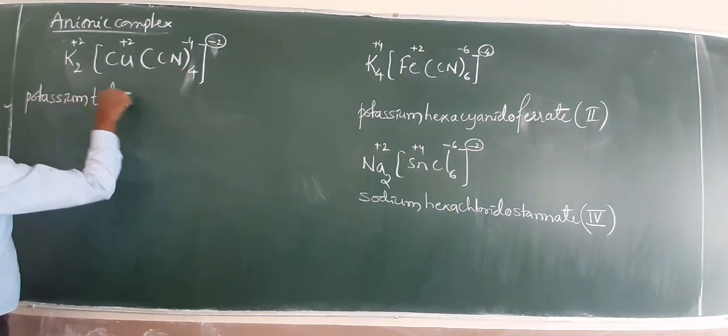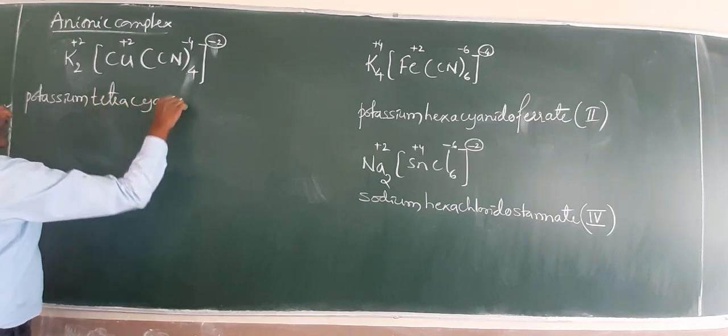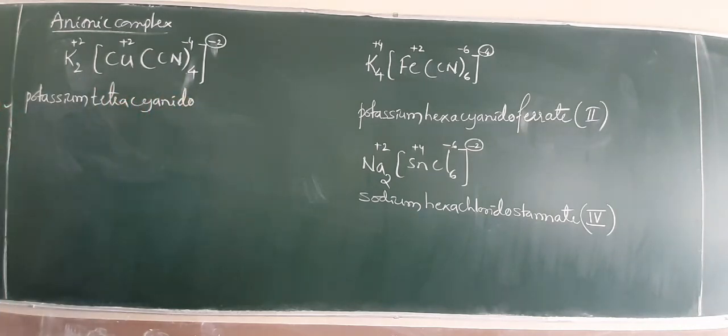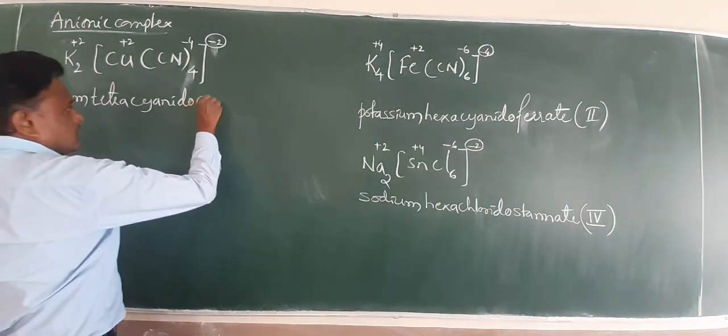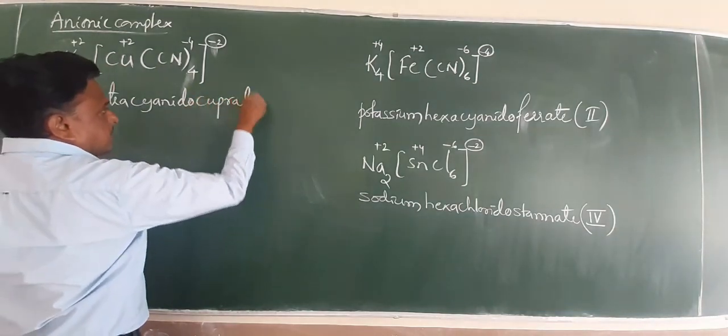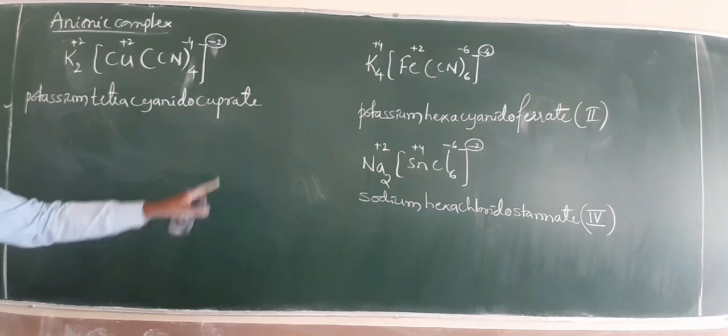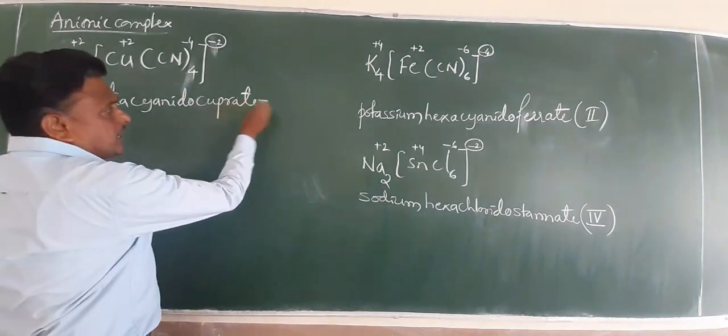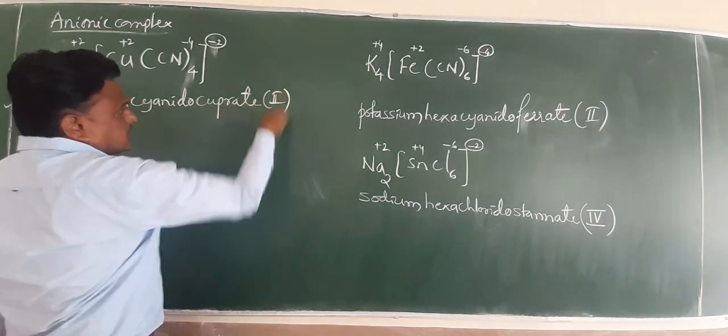Net changes and anionic complex. Potassium. Tetra cyanido. This is cuprate.